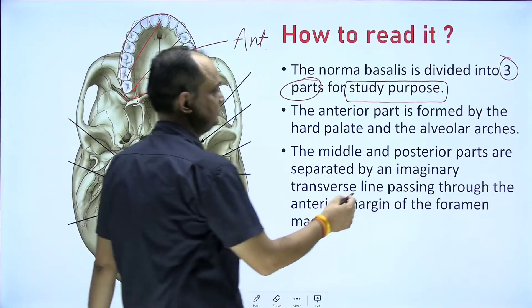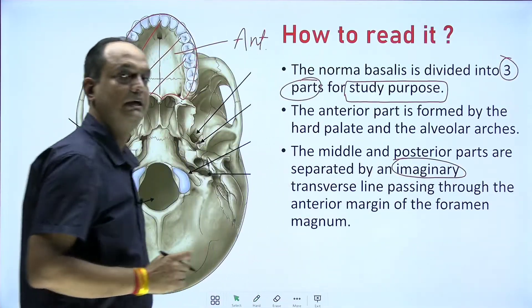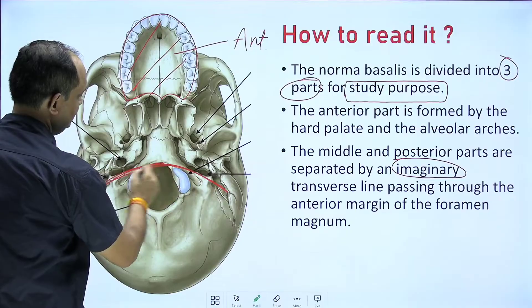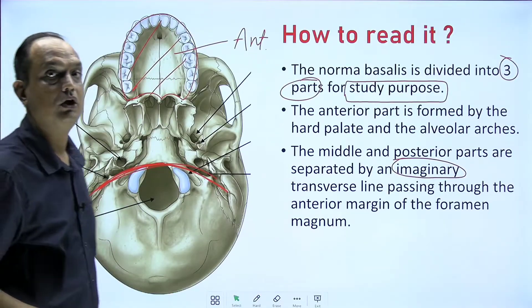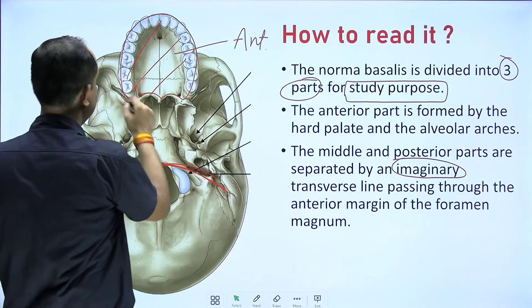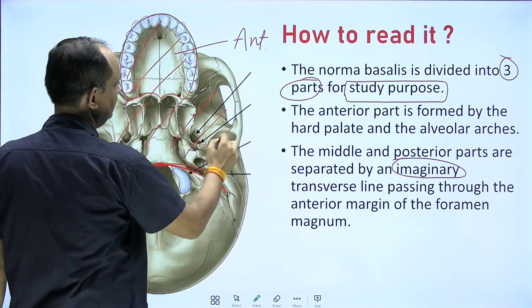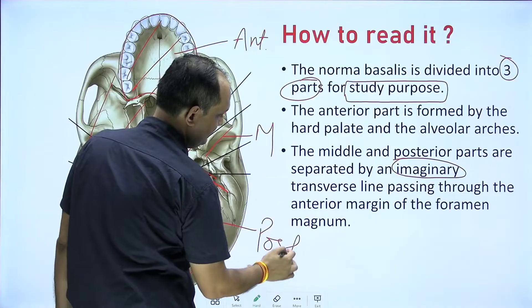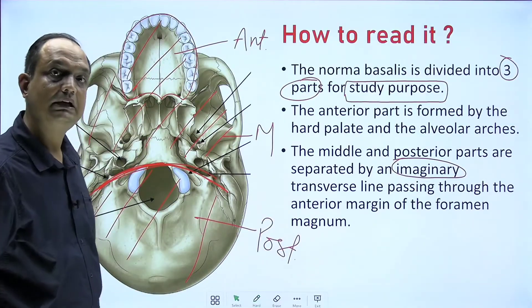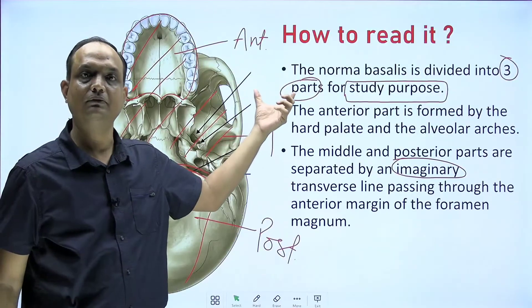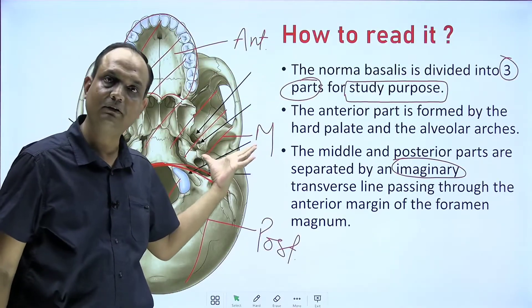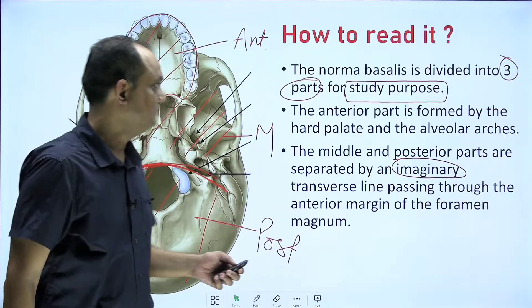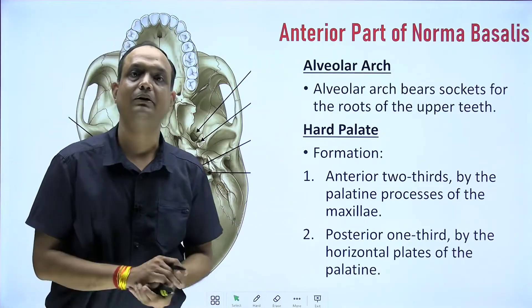To divide the middle and posterior parts, you draw an imaginary transverse or horizontal line through the anterior margin of the foramen magnum. In this way you have three different parts of norma basalis: the anterior part, the middle part, and the posterior part. We have three separate lectures covering the features of each part, and in this lecture we will discuss the anterior part of norma basalis.